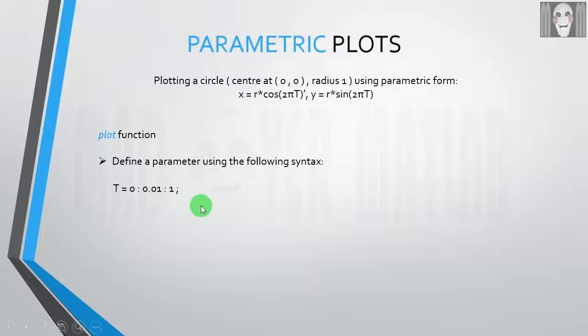First we need to define the parameter which is t. In this case, we have to set the lower limit, the upper limit, and the step in which we will be incrementing this parameter. In this case, the lower limit is 0, the upper limit is 1, and the step is 0.01.